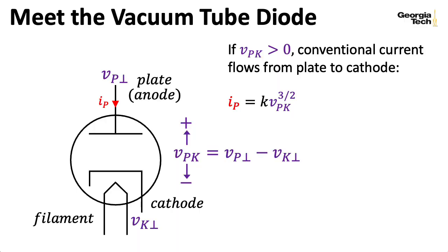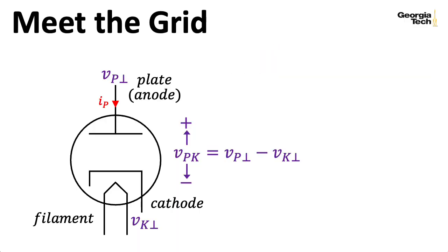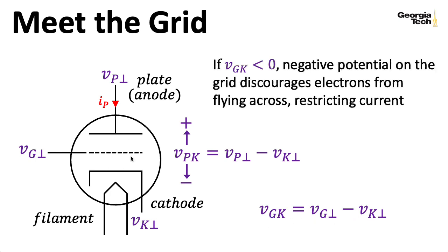Now, in the introduction, I promised you a lecture on triodes, not diodes. To make a triode, we need to introduce the grid, and we'll represent the voltage at the grid with respect to ground with this symbol here. So if the voltage at the grid relative to the voltage at the cathode is negative, some of the electrons that are flying across from the cathode to the plate are going to be discouraged by that negative potential on the grid, which restricts the flow of current. Note that I could turn a triode into a diode by just connecting the grid and the cathode.